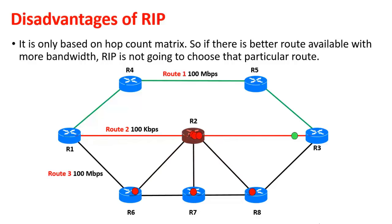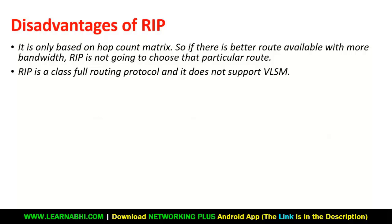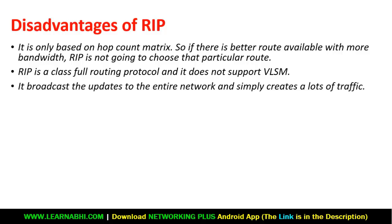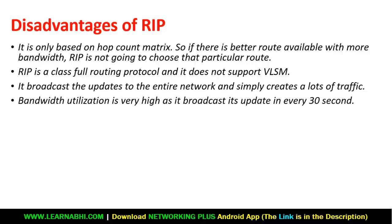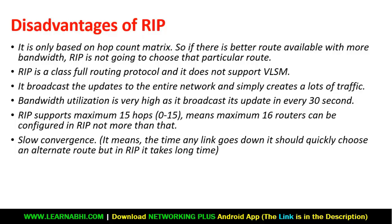More disadvantages of RIP: RIP is a classful routing protocol and does not support VLSM (Variable Length Subnet Mask). RIP broadcasts updates to the entire network, creating lots of traffic. Bandwidth utilization is very high as it broadcasts updates every 30 seconds. RIP supports a maximum of 15 hop counts, so no more than 16 routers can be configured. The convergence rate is slow — when any link goes down, RIP takes a long time to choose an alternate route.